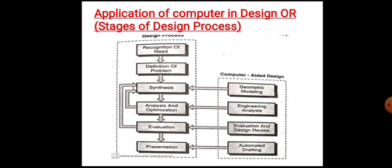Next we discuss the application of computers in design, or the stages of the design process. The general design process consists of six phases. Step 1 is recognition of need — every design process starts with the recognition or identification of a need. Recognition of need is the outcome of either a requirement or discontent with the existing system.